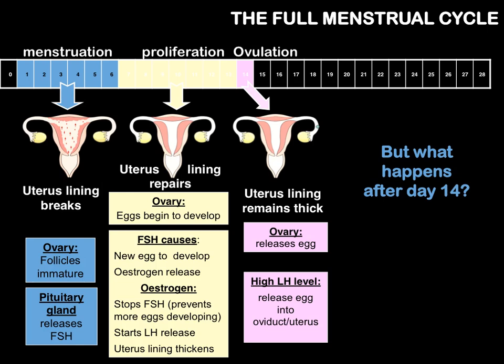As a recap: during the menstruation period the uterus lining is breaking down, the follicles are immature, and FSH has just started to be released. During the proliferation period, the uterus lining repairs, the eggs begin to develop, FSH causes the new egg to develop and causes oestrogen to be released. The oestrogen then turns off FSH via negative feedback, turns on the production of LH, and causes the uterus lining to thicken. Finally, at day 14, the ovulation period, the uterus lining is thick and the ovaries release the egg due to the high LH level.